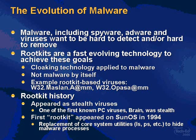What's the history of rootkits? They first appeared back in the 1980s. In fact, one of the first known PC viruses, called Brain, was what's called a DOS stealth virus — kind of the first evidence of somebody wanting to cloak malware.